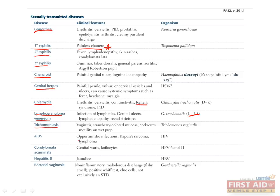Trichomoniasis is caused by the protozoan Trichomonas vaginalis. This presents with vaginitis and strawberry-colored mucosa. On a wet prep, you'll see corkscrew motility with this infection. AIDS is caused by the virus HIV, which can make patients more susceptible to opportunistic infections and can also cause Kaposi sarcoma and lymphoma. HPV viruses 6 and 11 can cause condylomata acuminata — basically genital warts — with koilocytes visible on microscopy. Hepatitis B virus is basically the only sexually transmitted hepatitis virus, and its most notable presenting symptom is jaundice.